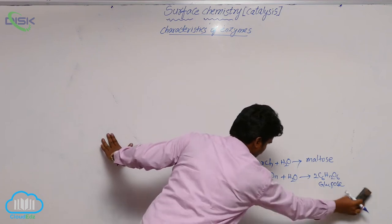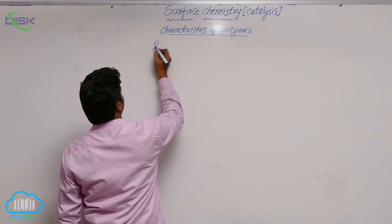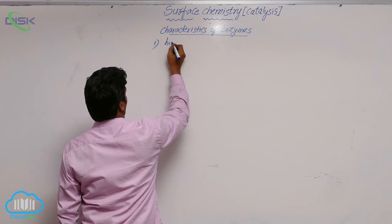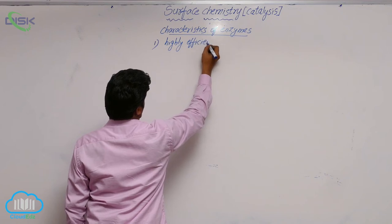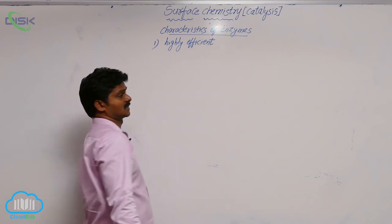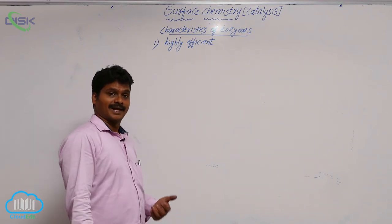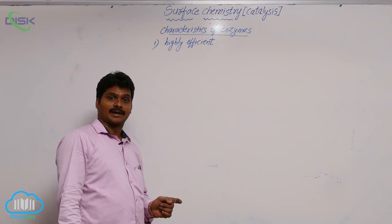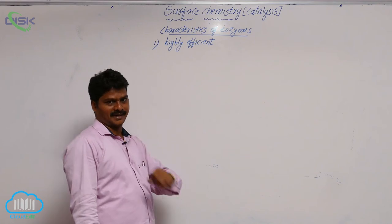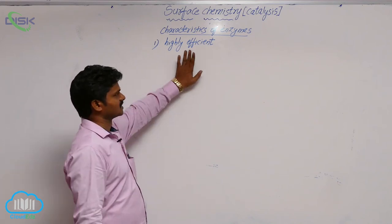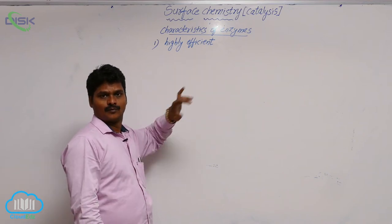Characteristics of enzymes: enzymes are highly efficient. One enzyme molecule can transform 1 million reactant molecules per minute. Compared to normal catalysts, enzymes are more efficient.